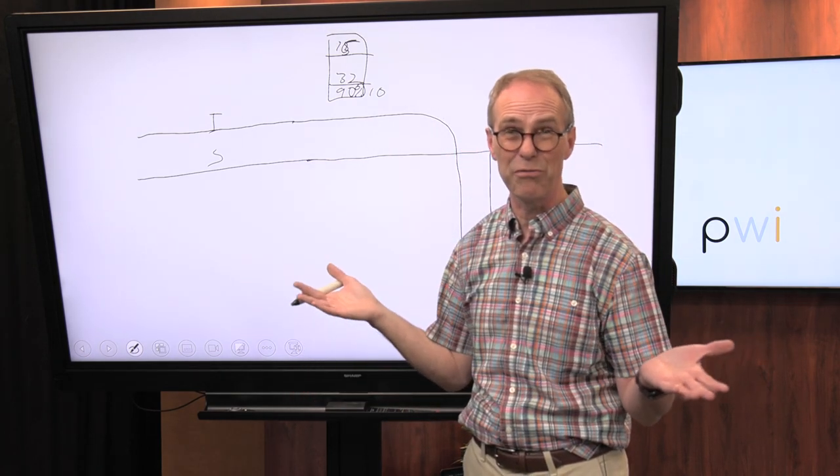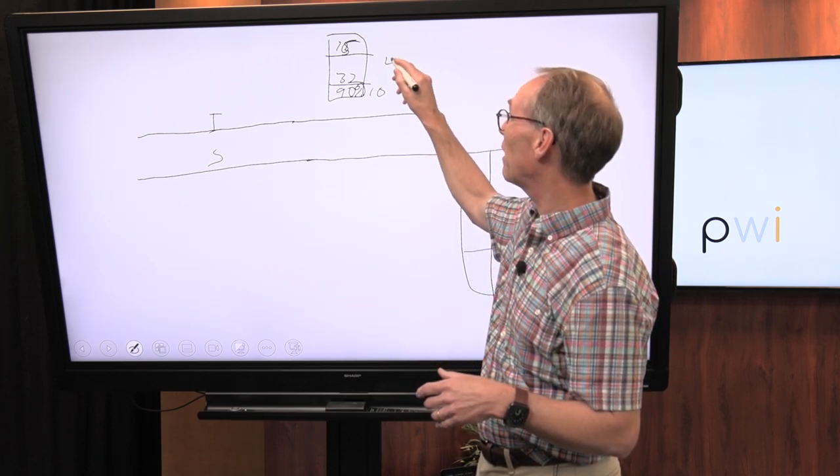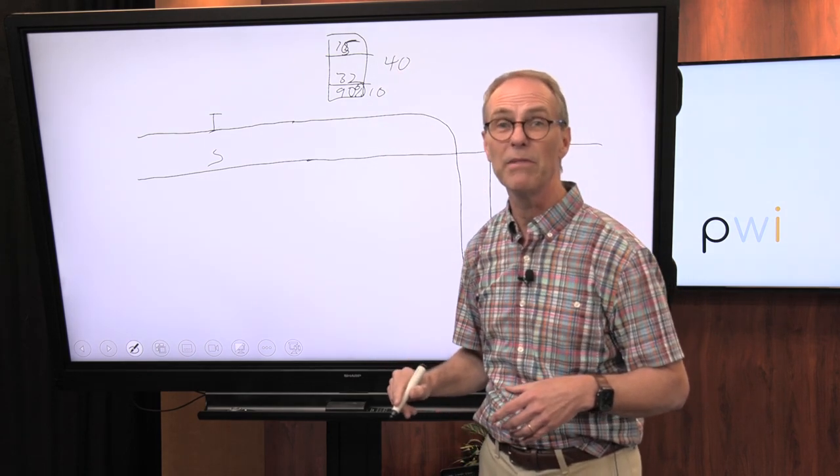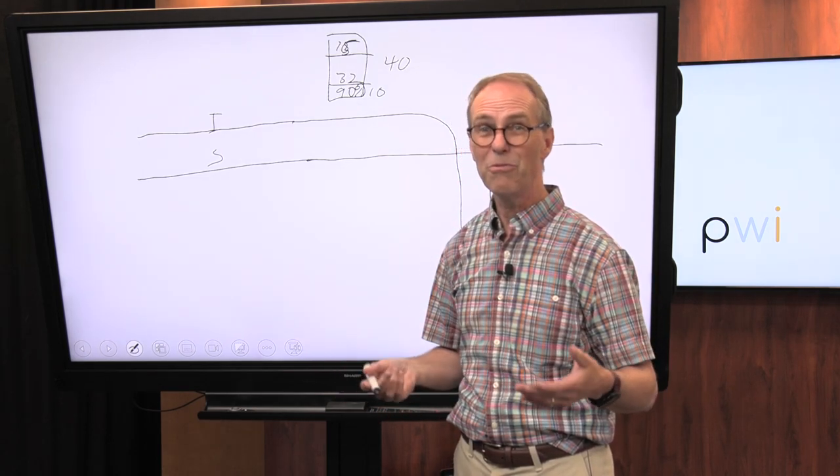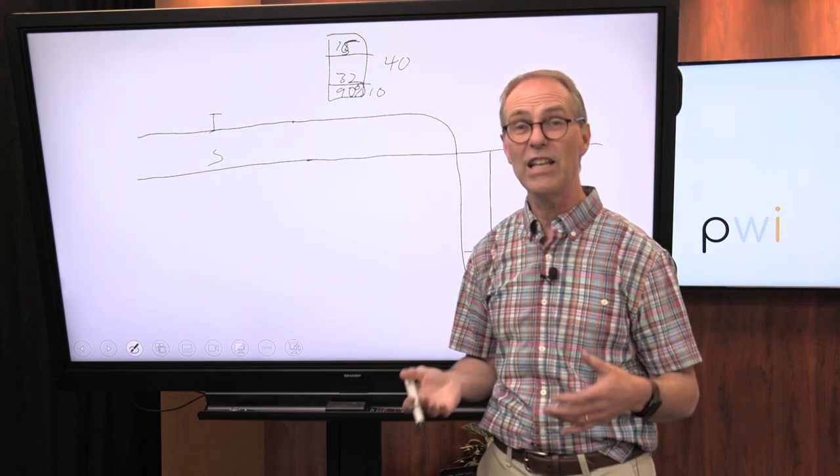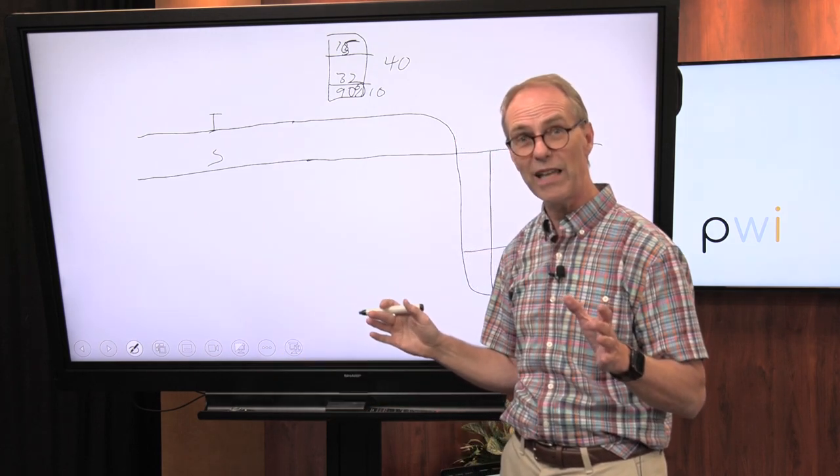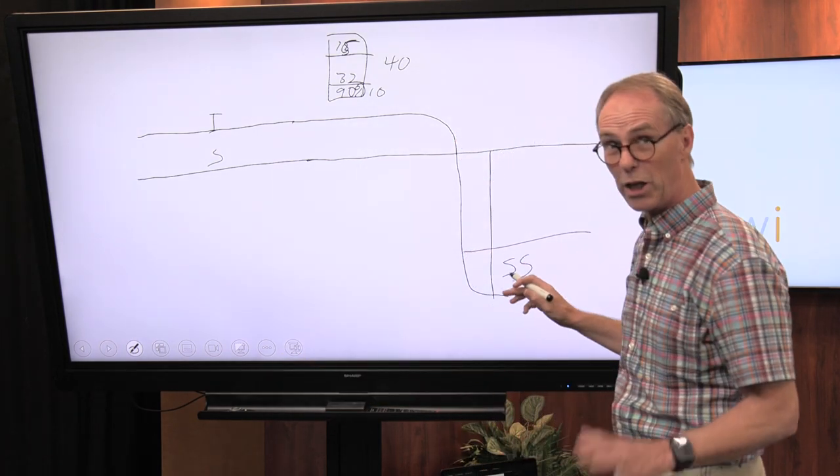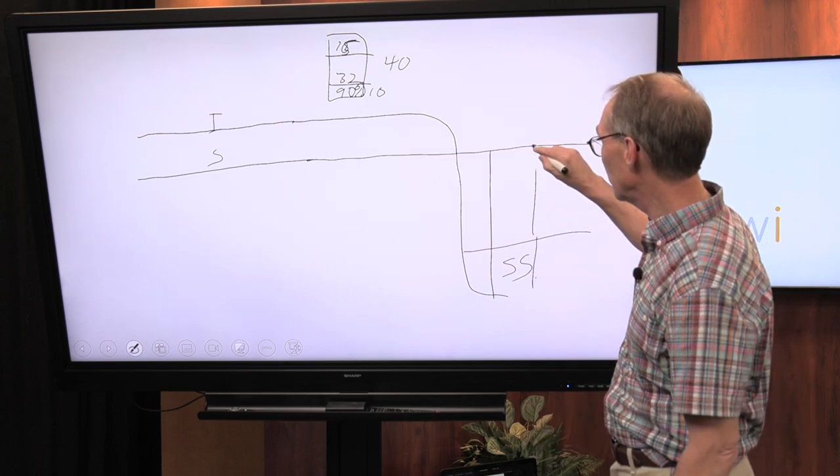As a rule of thumb—and I hate rules of thumb but it gives you an idea—maybe only about 40% of your income gets replaced by Social Security in retirement. Unless you want to live on 40% of your income, it's probably not going to cut it. You need to have other savings—that's where the 401k comes in.